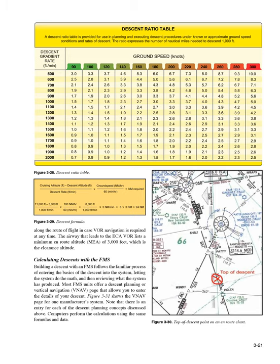Along the route of flight, in case VOR navigation is required at any time, the airway that leads to ESAVOR lists a minimum en-route altitude (MEA) of 3,000 feet, which is the clearance altitude. Calculating descents with the FMS: building a descent with an FMS follows the familiar process of entering the basics of the descent into the system, letting the system do the math, and then reviewing what the system has produced. Most FMS units offer a descent planning or vertical navigation (VNAV) page that allows you to enter the details of your descent.